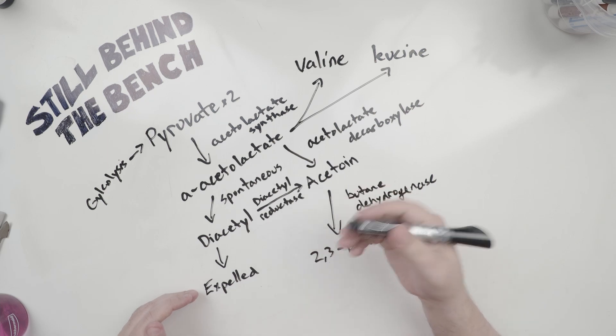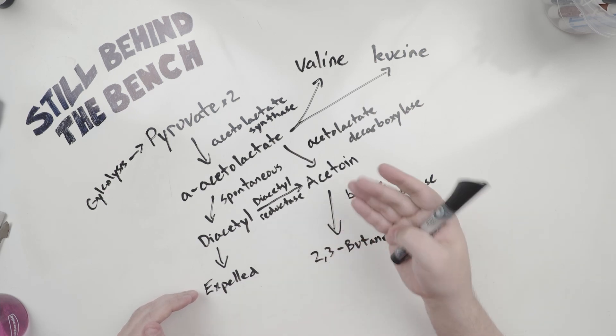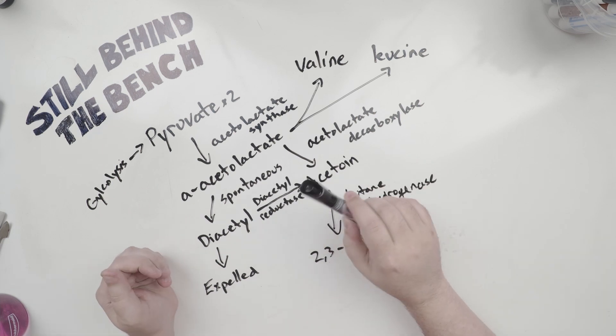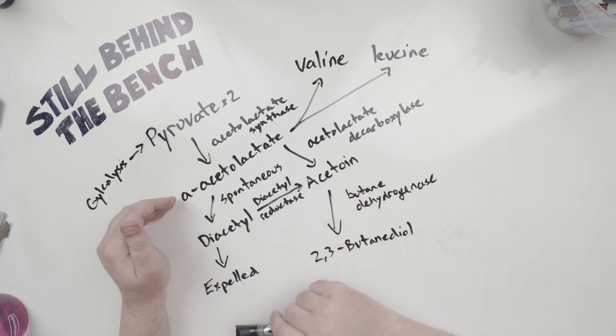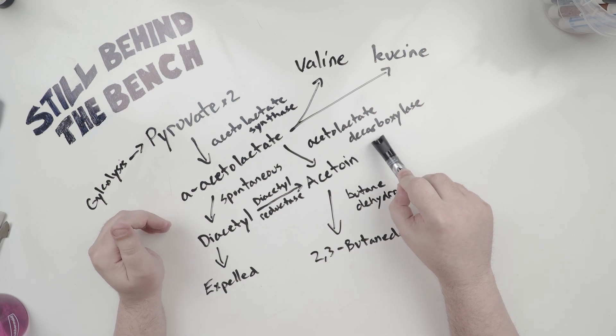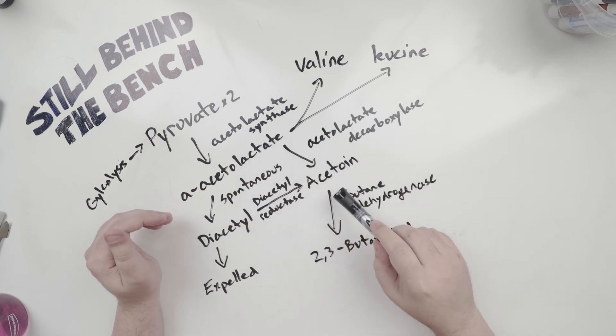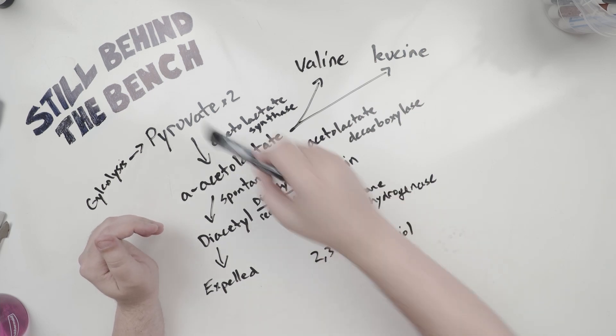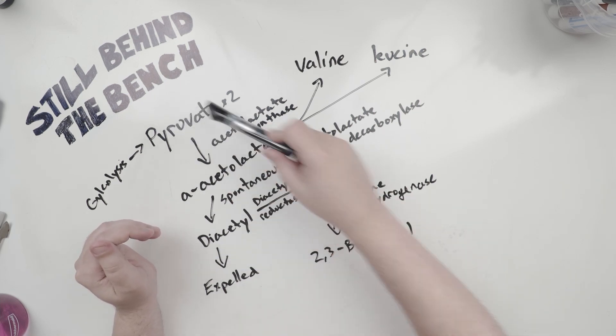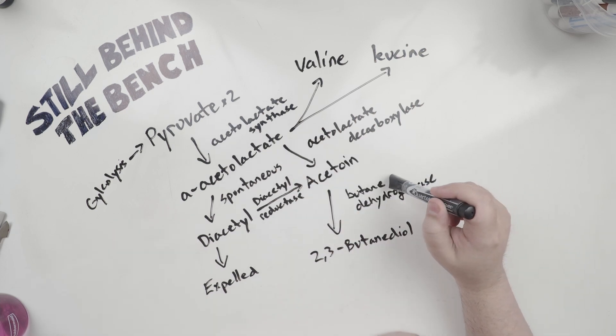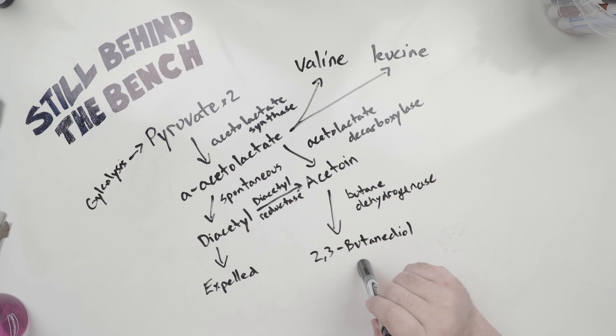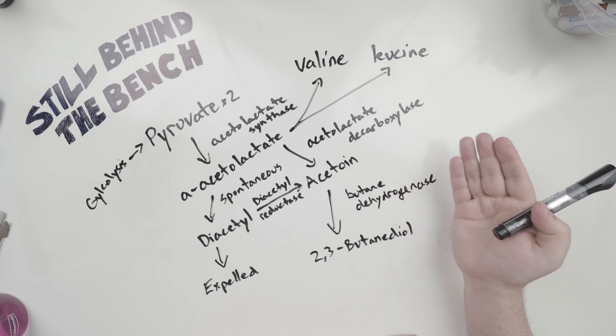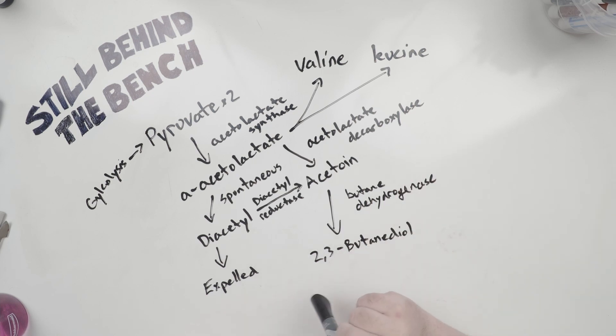But if the yeast doesn't immediately turn that diacetyl back into pyruvate to use for energy, or the diacetyl isn't turned into acetoin via diacetyl reductase, then it will expel that diacetyl out of the cell. And that's the main way you end up with diacetyl in your wash. The other way would be that the diacetyl is present inside of the cell when the cell dies and it breaks apart, releasing it into the wash. One other thing that can happen is that this alpha-acetolactate can meet up with acetolactate decarboxylase, an enzyme, and turn directly into acetoin.